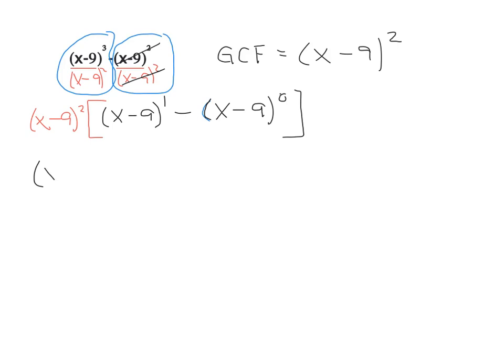We have the x minus 9 quantity squared in front. Inside, I'm going to lose the bracket now because we're going to take away the parentheses. x minus 9 to the first is just x minus 9, minus x minus 9 to the 0 power, we said before, is 1.